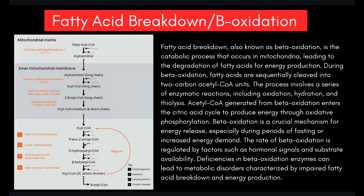The primary goal of beta oxidation is to generate acetyl-CoA, which can then enter the citric acid cycle — also known as the Krebs cycle — to produce energy through oxidative phosphorylation. Acetyl-CoA produced during beta oxidation is a central metabolite linking various metabolic pathways, including the citric acid cycle and ketogenesis.